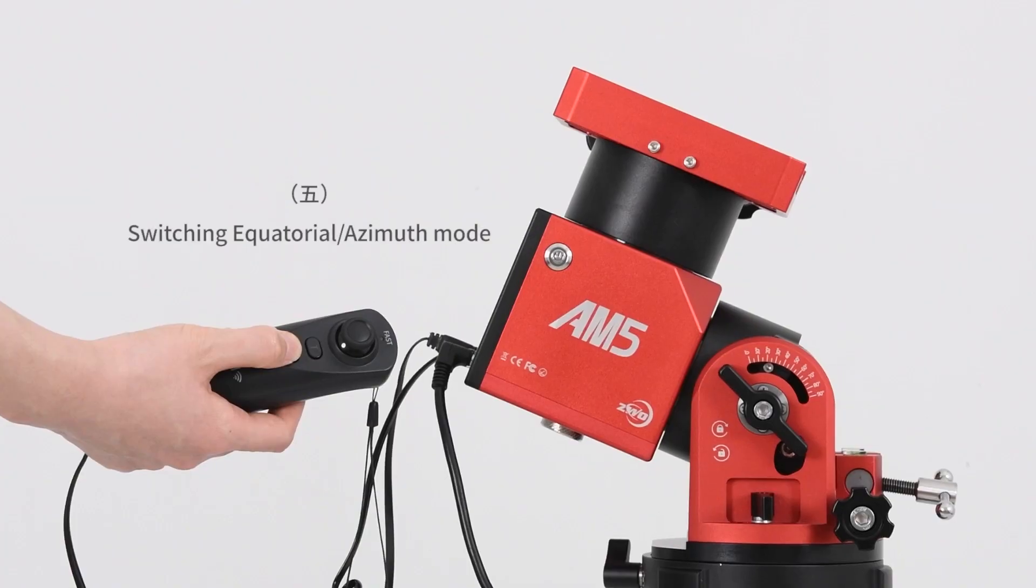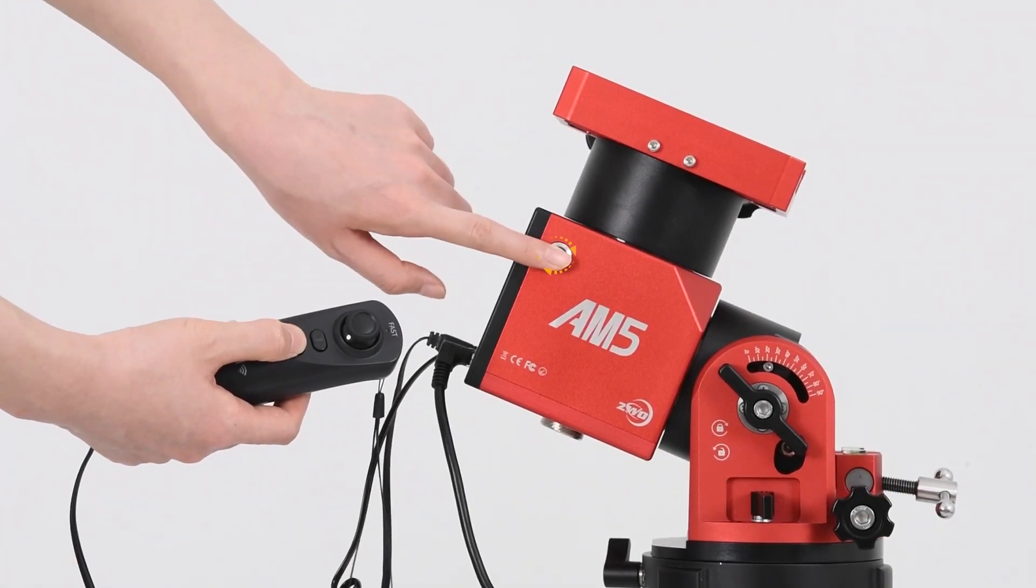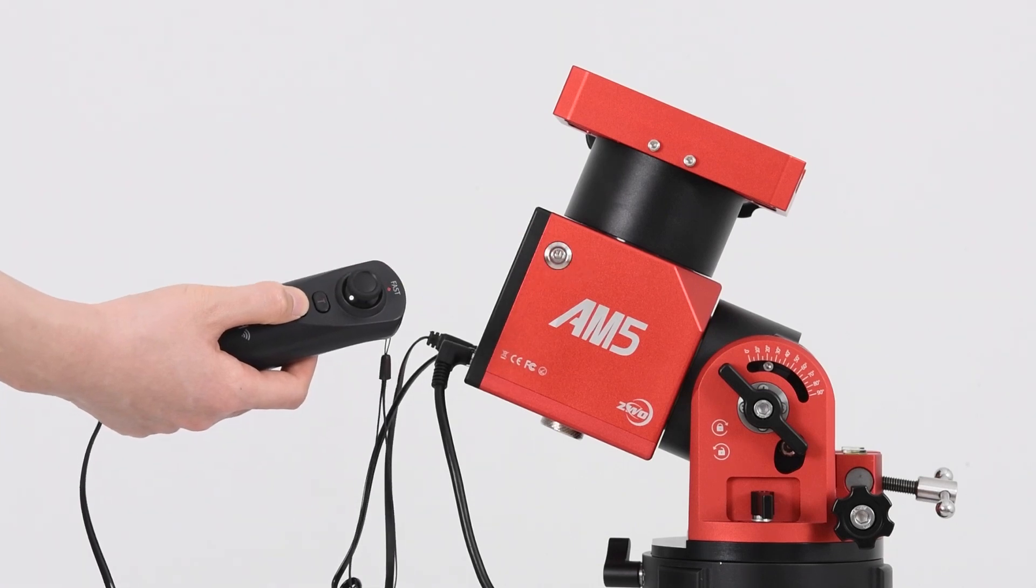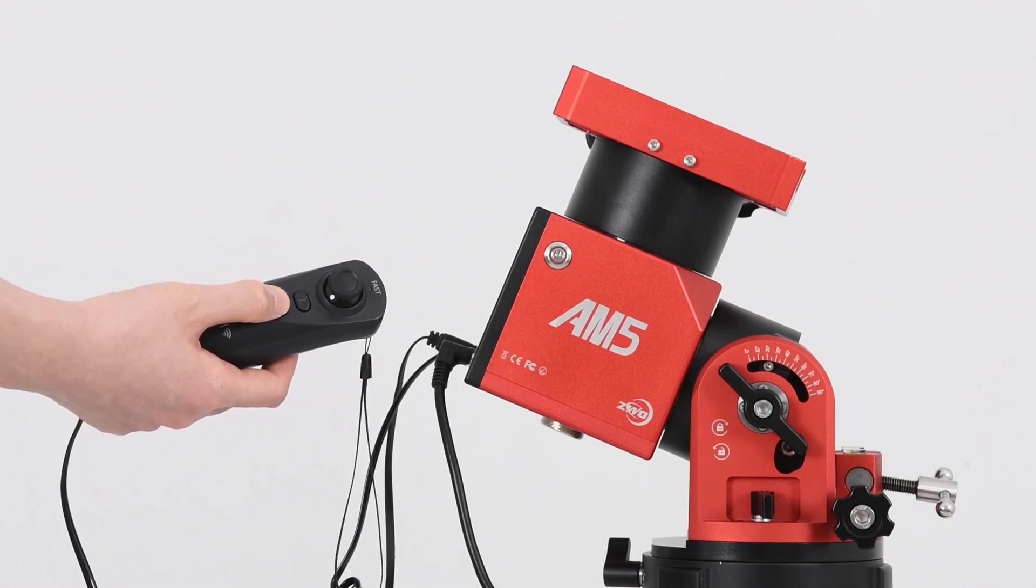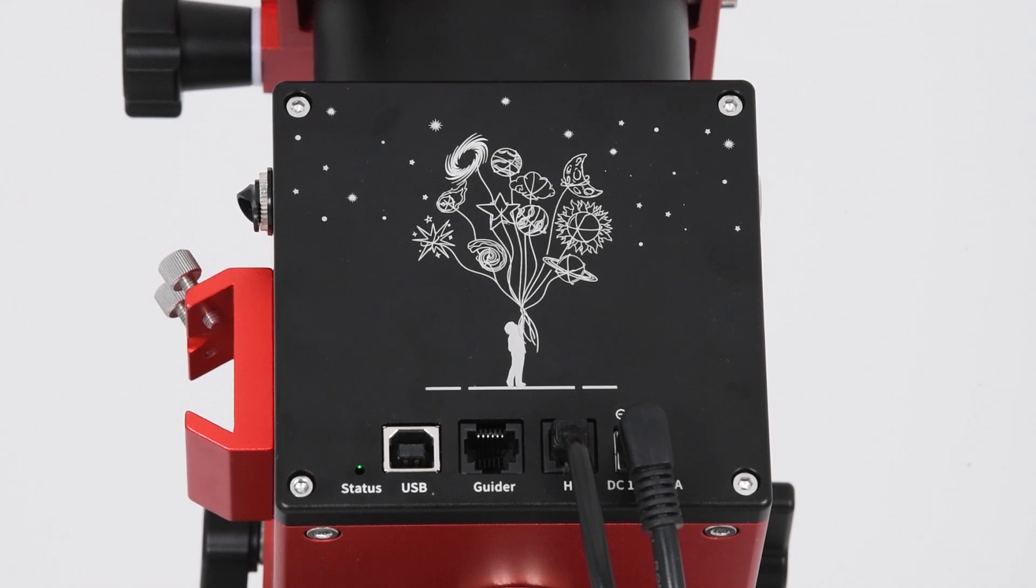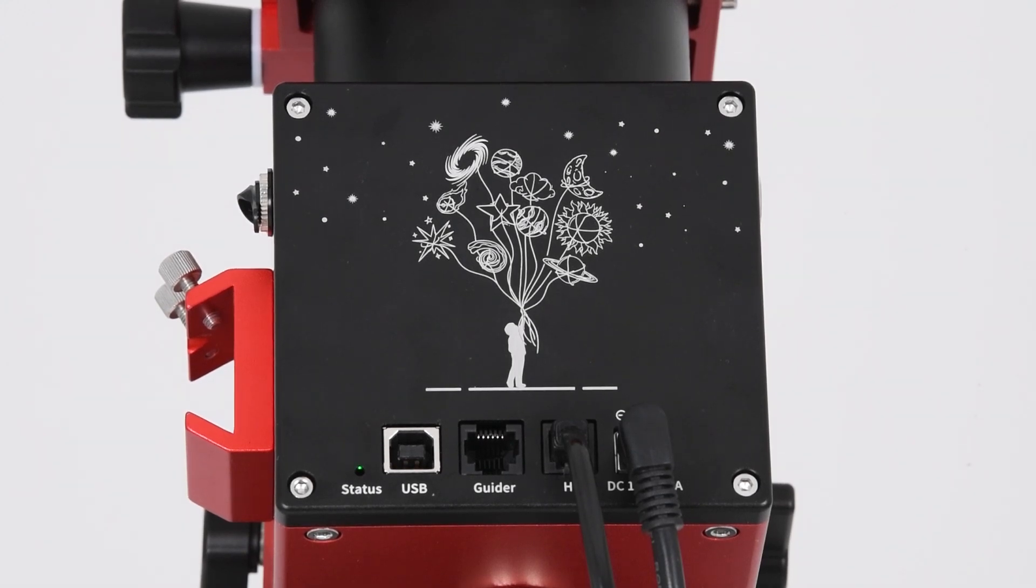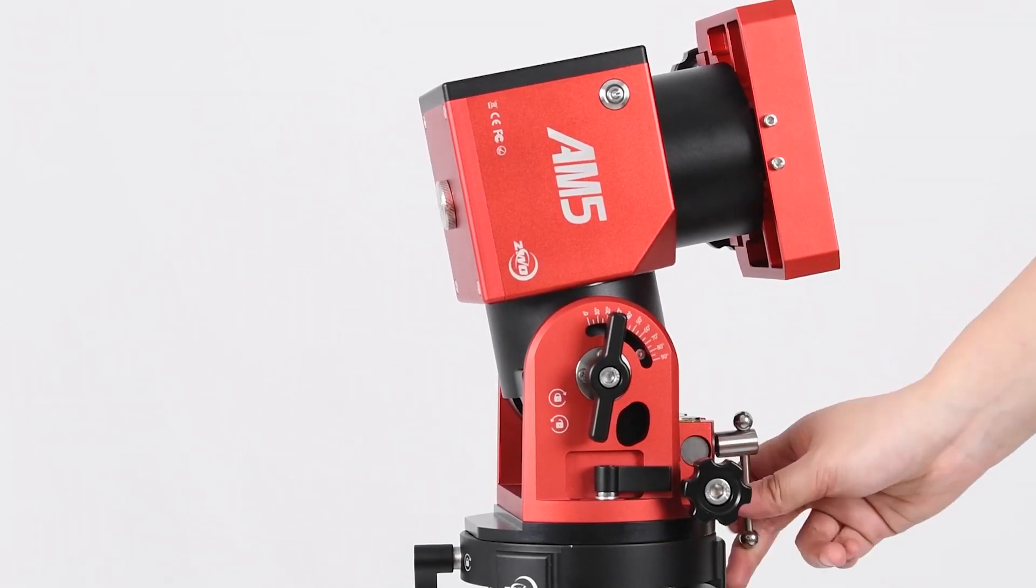Switching between equatorial and azimuth modes. First, power off the mount. Hold down the cancel button to reactivate the mount. To enter azimuth mode, hold down the cancel button while the mount is off until the light indicator turns green. Adjust the latitude range to 90 degrees.